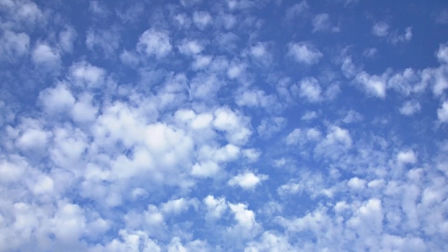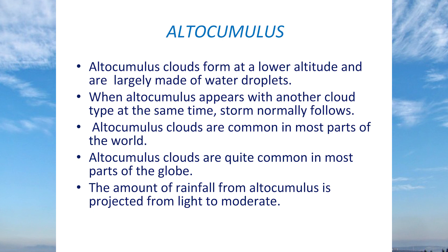Altocumulus clouds form at lower altitudes and contain water droplets. They are common in most parts of the globe and usually grow by convection. They can also combine with other clouds like cumulonimbus and will give rainfall.